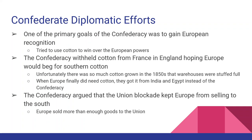The Confederacy tries to gain recognition from foreign countries by selling cotton in exchange for help in the war. Unfortunately, Europe had warehouses full of Southern cotton from the previous decade and didn't need more. When cotton diplomacy fails, the Confederacy turns to straight economics — offering Britain and France exclusive trading partnerships if they help lift the Union blockade. Europe responds that they sell enough to the Union and don't need Confederate business. Getting outside recognition and help simply doesn't happen, and the Confederacy knows at that point it faces a slow defeat.